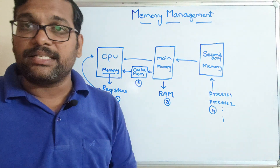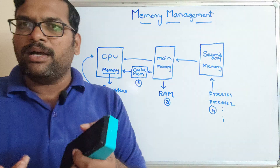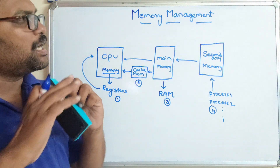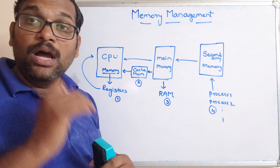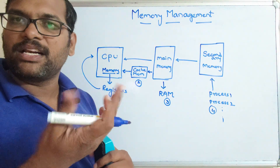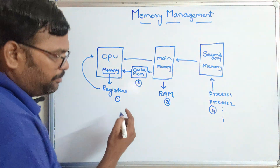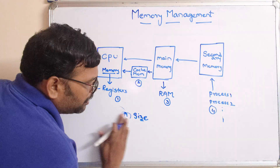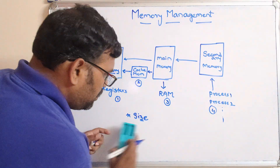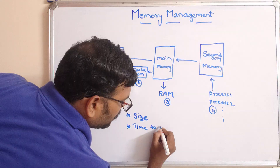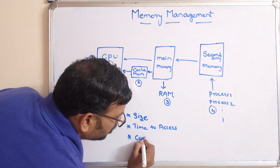The operating system is concerned with how efficiently this memory will be utilized. There will be different types of addresses — logical address and physical address. To load data from secondary memory to main memory, it requires some addresses and address binding. All this complete information about address types and address binding comes under memory management. Now the three criteria we need to discuss about memory are: first, size; second, time to access or access time; and third, cost.